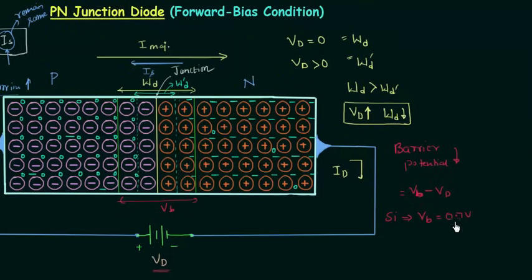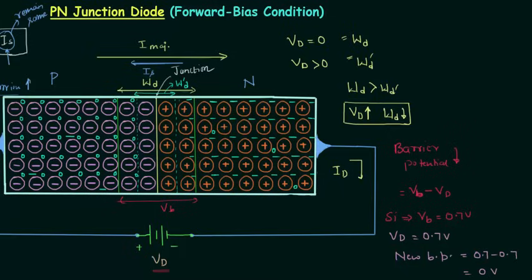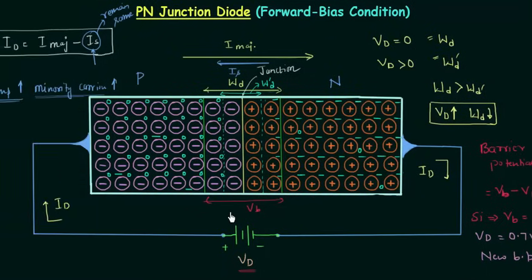The barrier potential for silicon is 0.7 volts, as calculated previously. If we make VD equal to 0.7 volts, then the new barrier potential equals 0.7 minus 0.7, which is 0 volts. The barrier potential decreases with increase in forward bias voltage. An electron on the N side now sees a reduced barrier at the junction and a strong attraction for the positive potential applied to the P side. As the applied voltage increases, the depletion layer continues to decrease until a flood of electrons passes through the junction, causing an exponential rise in diode current ID.